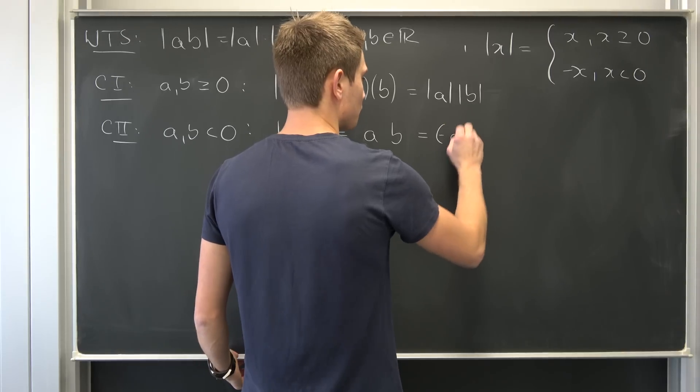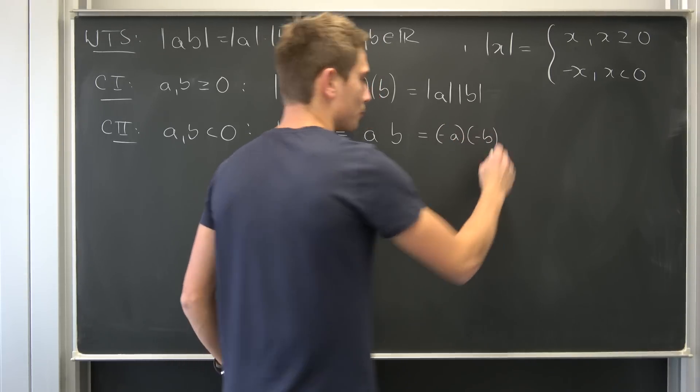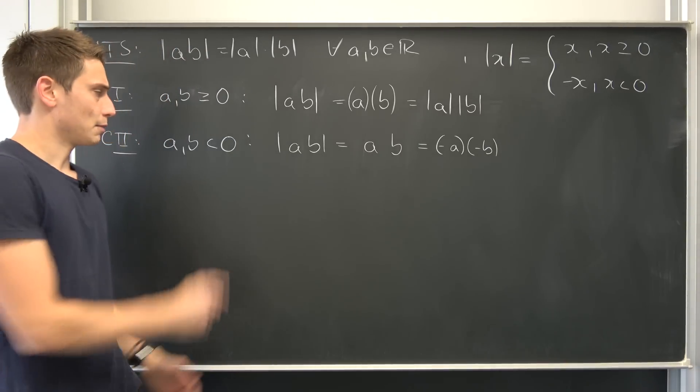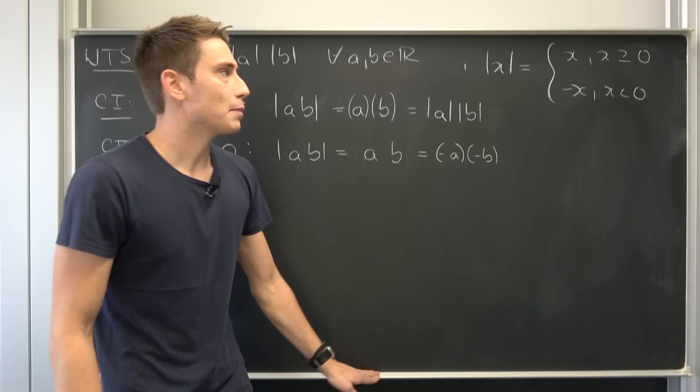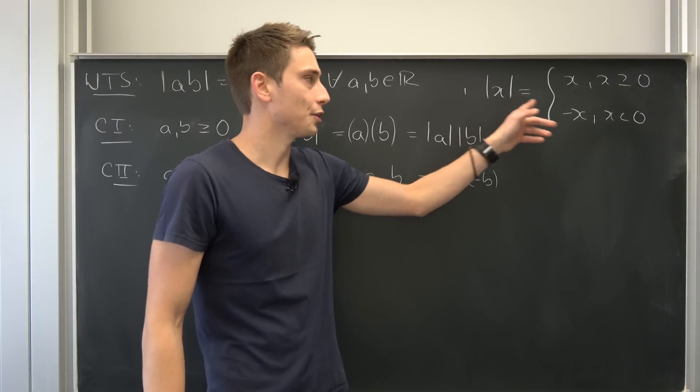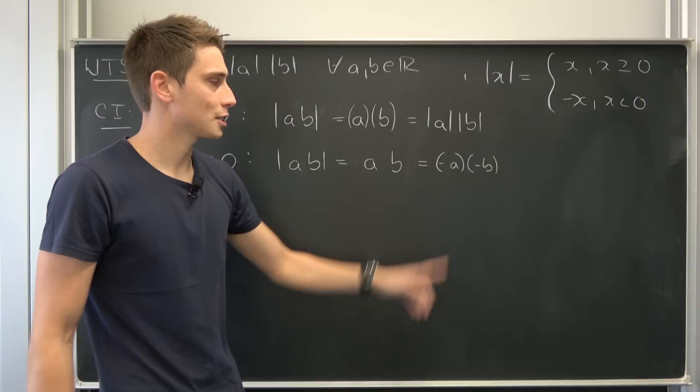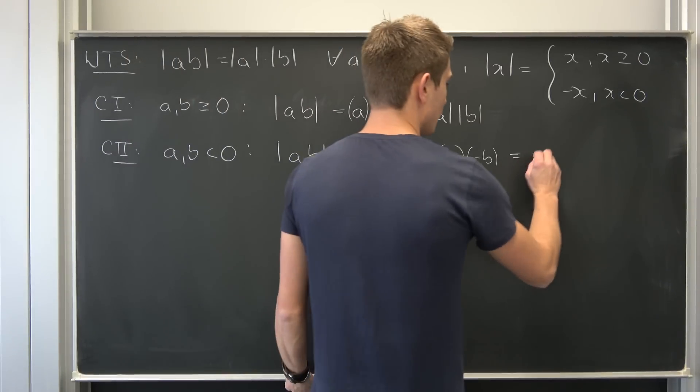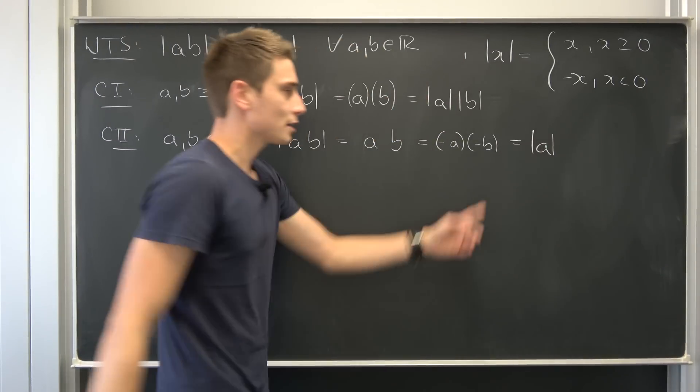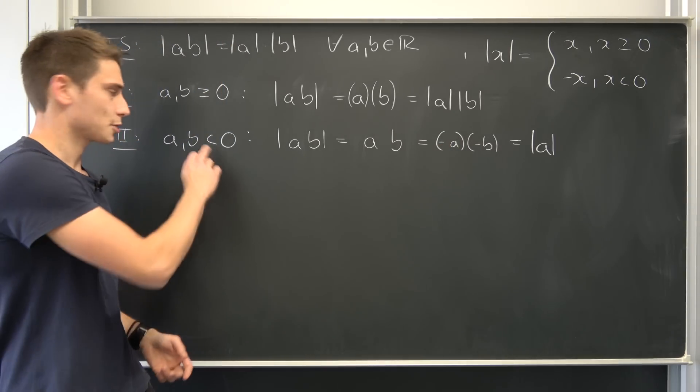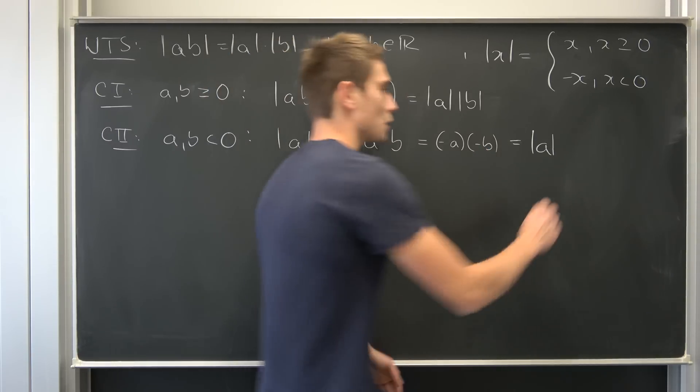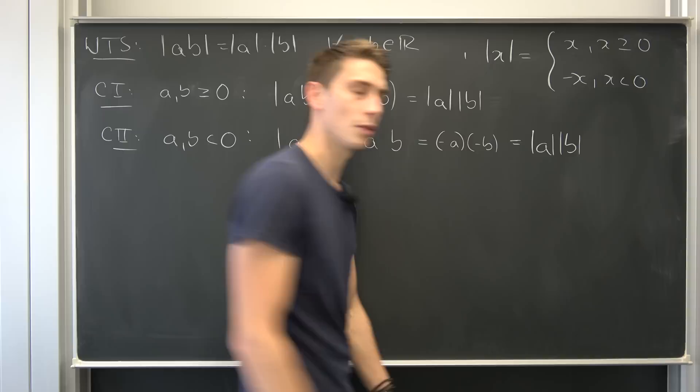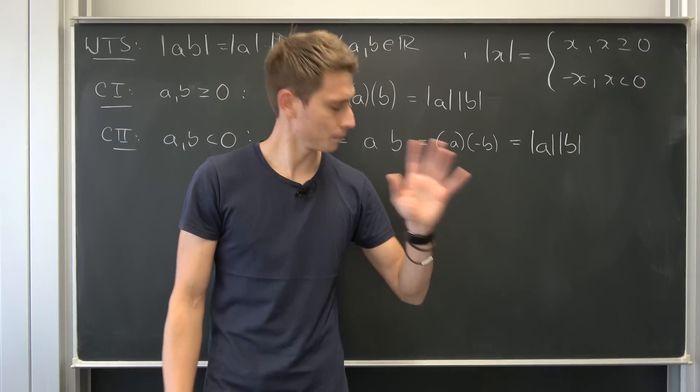So, we have negative A times negative B. And, you see, by our assumption, A has been negative. Meaning, the absolute value of A is going to result in negative A. This is what we have here. So, this is just the absolute value of A. Same thing here. B, by assumption, is just negative. So, this thing right here is going to result in just absolute value of B. Second case. Cleared. Awesome.